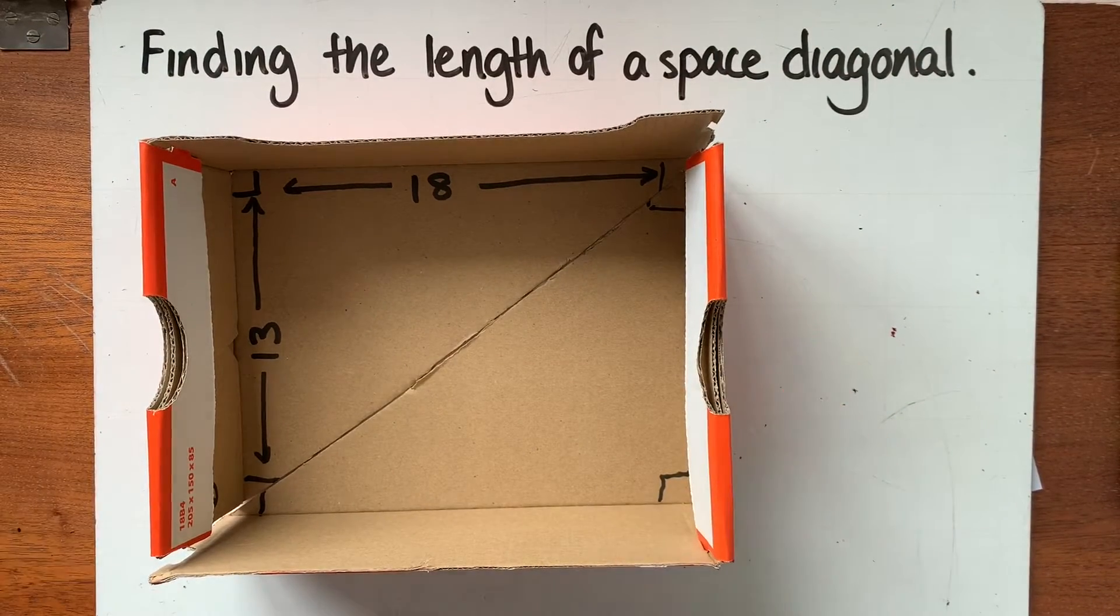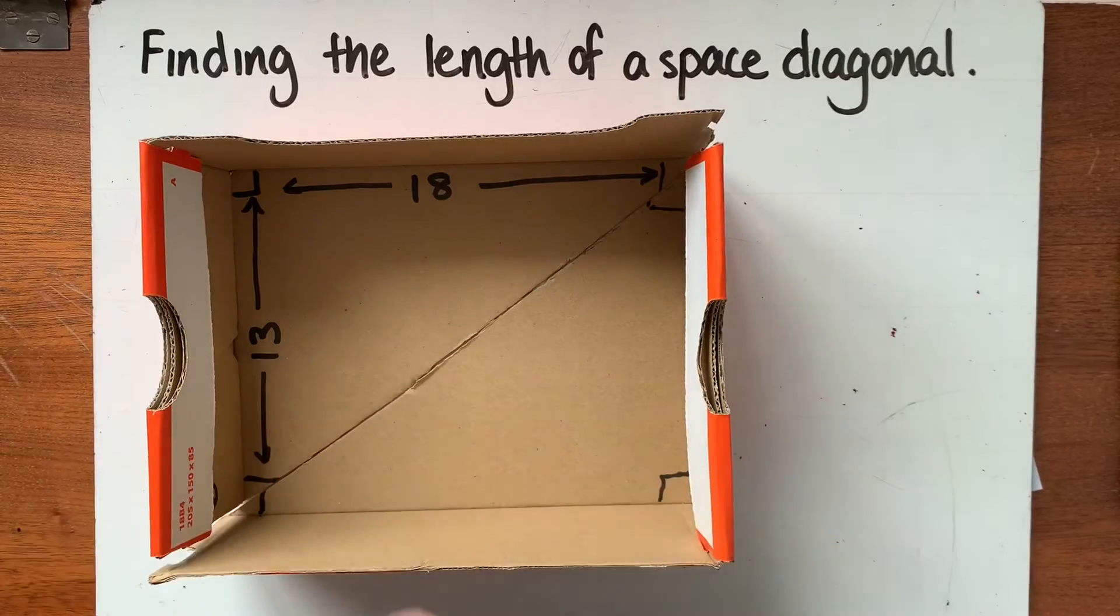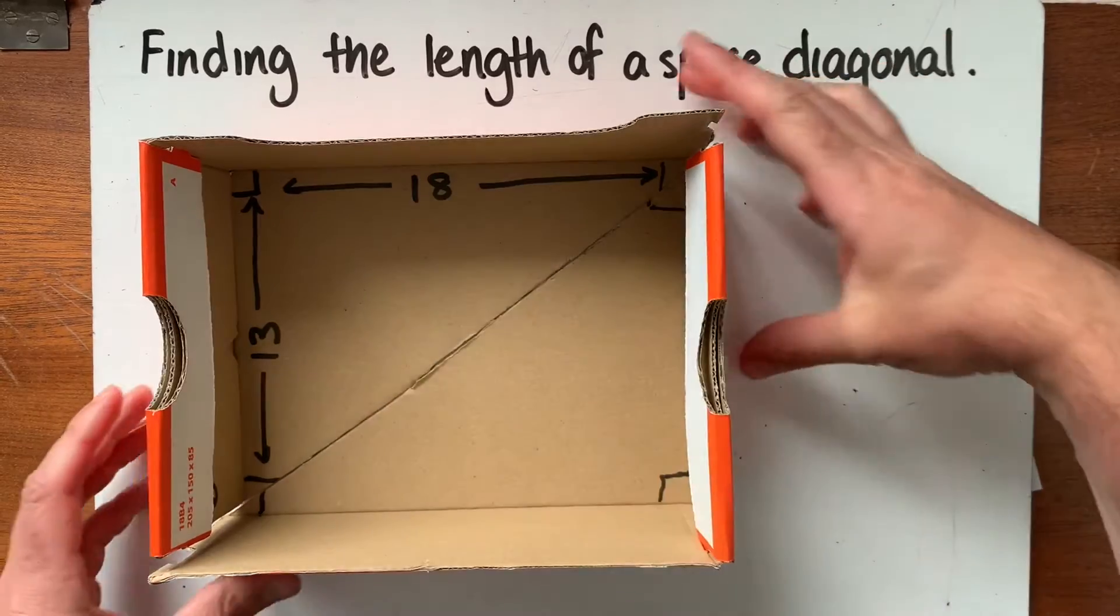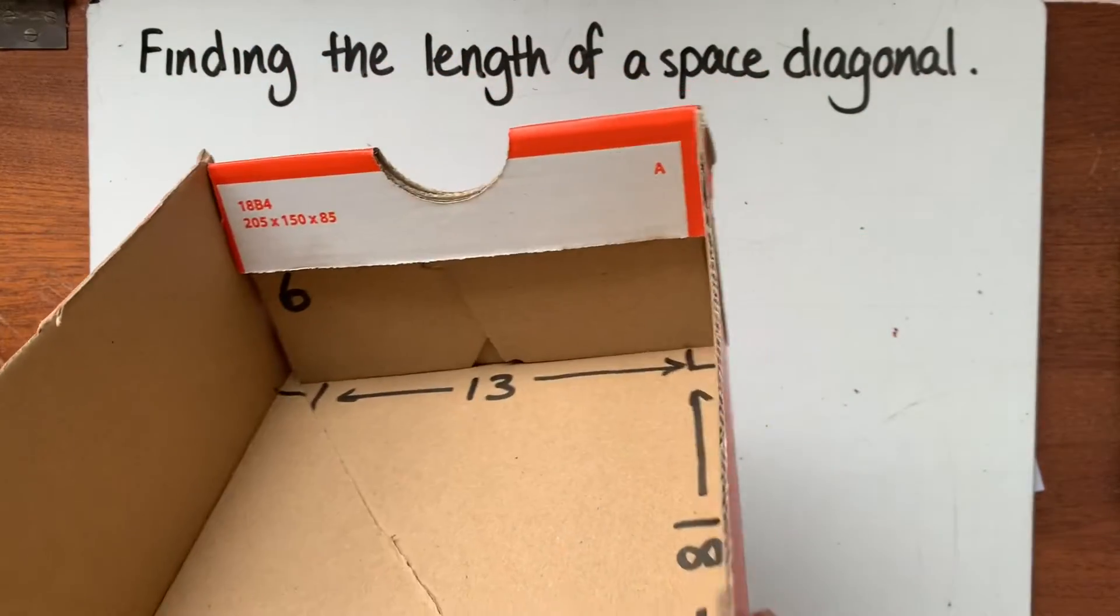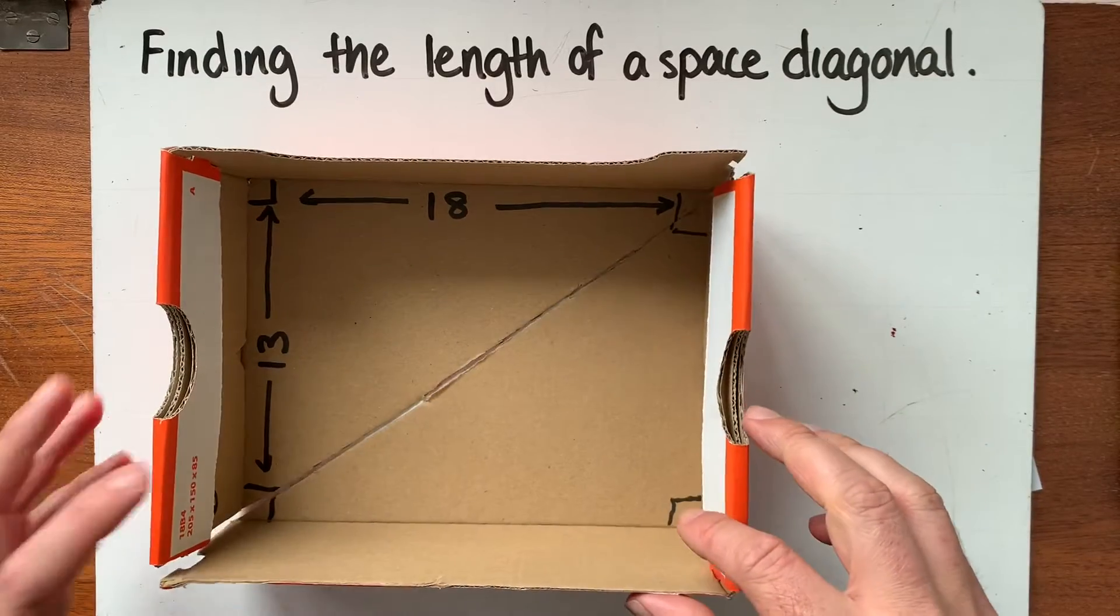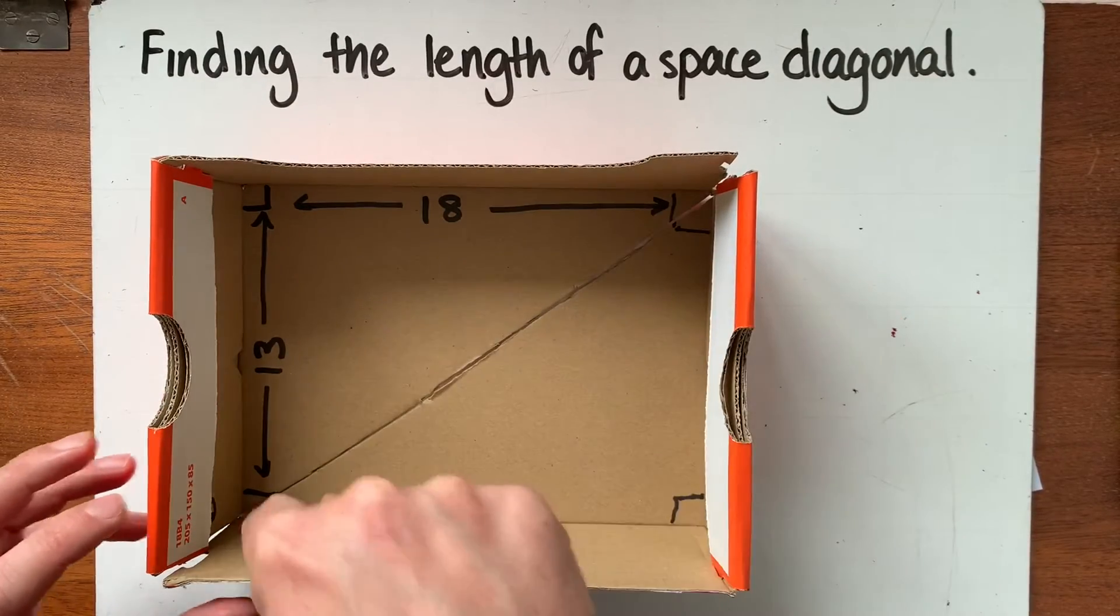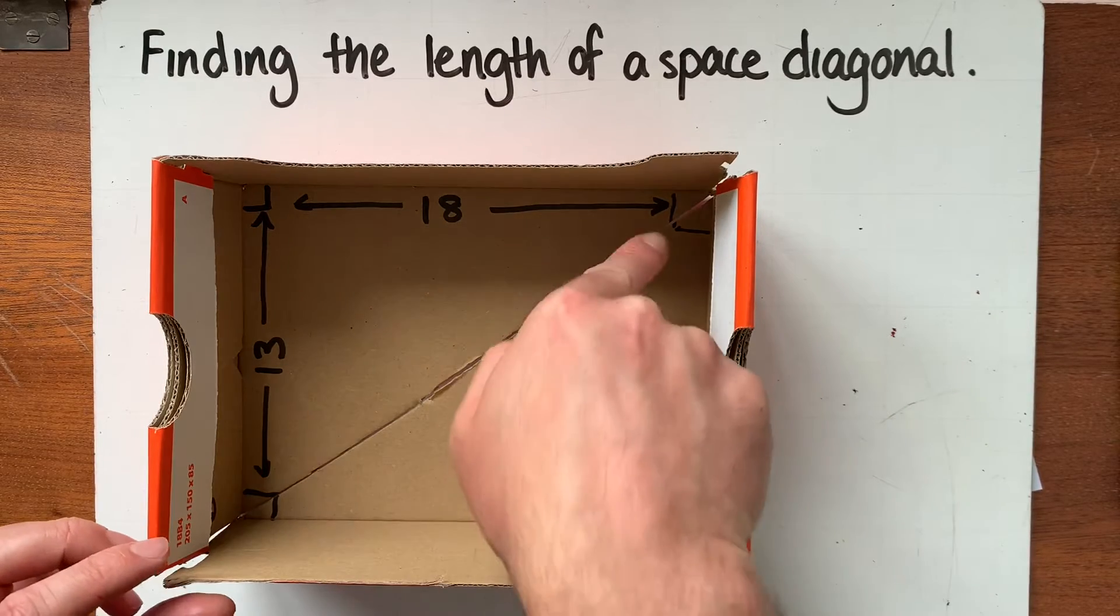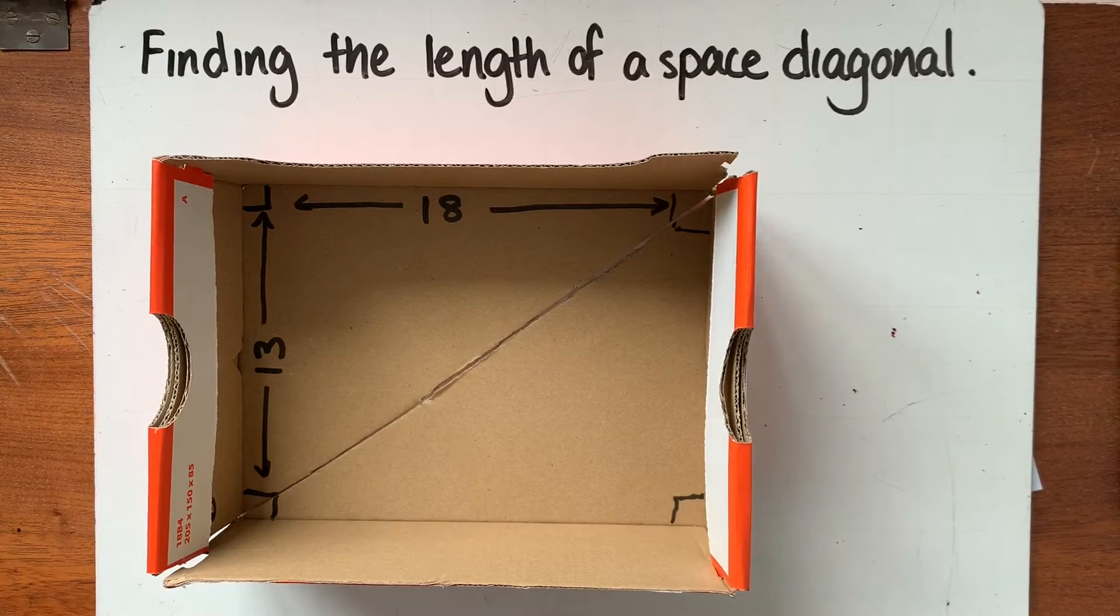So there are a couple of parts to this. First thing we need are the dimensions of this cuboid. So it's 18 units long, 13 units wide and it is 6 units tall. In the corners here I've got some right angles marked and what we're going to try and do is find the length of the diagonal from this top corner here to the bottom corner down there.